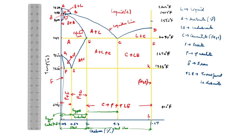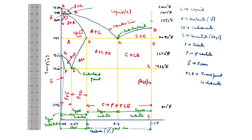From here to here is hypoeutectic; here is hypereutectic. This point is the eutectoid point. This point is the eutectic point. This point is the peritectic point. The peritectic point means liquid plus solid converts into a new solid. The eutectic point means liquid converts into two different solids. The eutectoid point means a solid phase converts into two different solids.